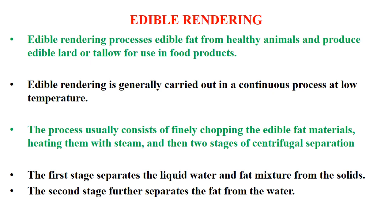The edible rendering process usually consists of finely chopping the edible fat materials, heating them with steam, and then two stages of centrifugal separation. The major material is fatty tissues separated by trimming. In the modern meat industry, visible fat is separated from the surface as subcutaneous fat and also from visceral depot fat. These fats are rendered and purified for different uses in food products. The first stage separates the liquid water and fat mixture from the solids, and the second stage further separates the fat from the water.